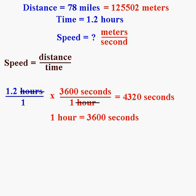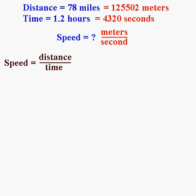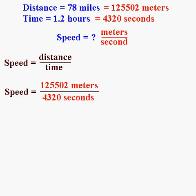So 1.2 hours is the same thing as 4320 seconds. Let's put it up there. We now know that the time is 1.2 hours, or 4320 seconds. Now we can finally solve the problem. We're asked to calculate speed, which is simply distance over time. Now that I have the right units — distance in meters and time in seconds — I can just plug them into the equation. Distance is 125,502 meters, and time is 4320 seconds. So the speed is 125,502 meters over 4320 seconds.